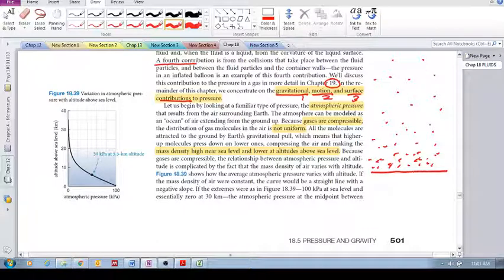Okay, so what does this tell us? Mass density is high near sea level. So this is sea level, so the density is high, and it is lower above sea level. It gets lower, the density gets lower.